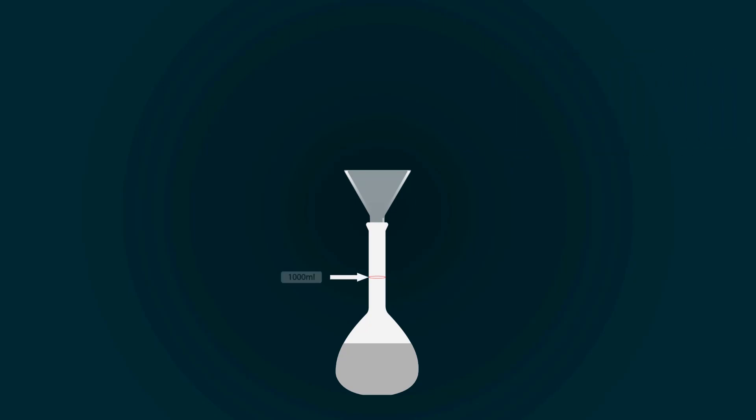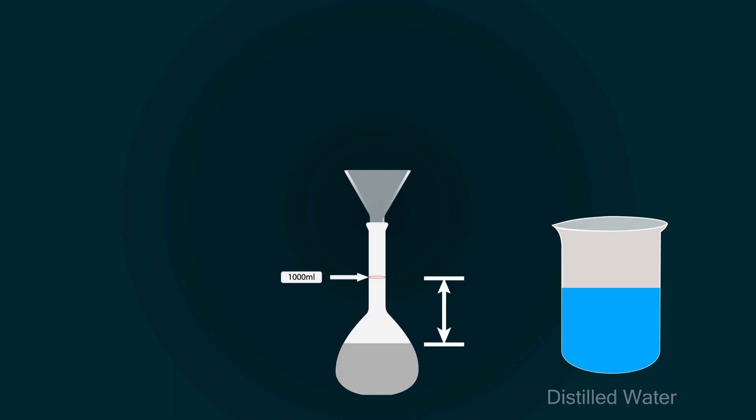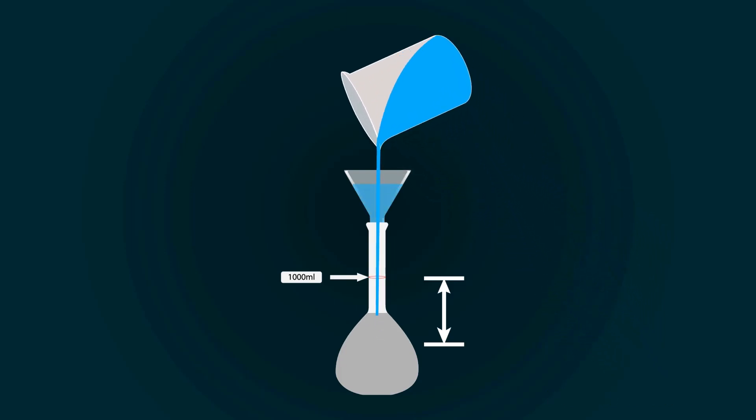You have to fill the volumetric flask up to the 1000 milliliter point. For that you have to add more distilled water. So, take more distilled water into an empty beaker and start pouring it into the volumetric flask.